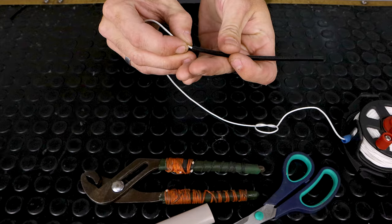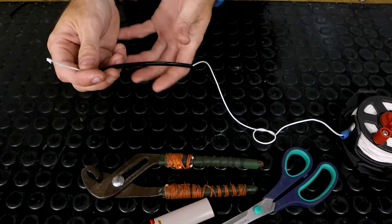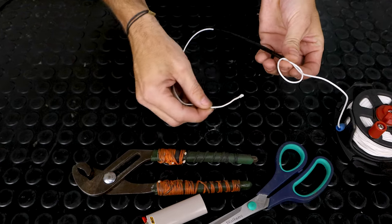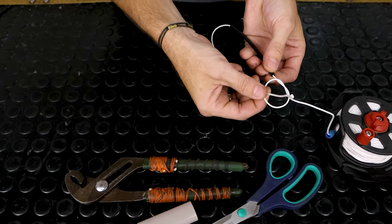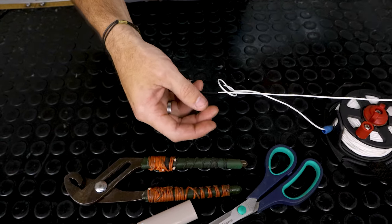Once the tube is slid on, thread the trailing end through the knot before you pull it tight. Then cinch it up and create the next part of the knot.